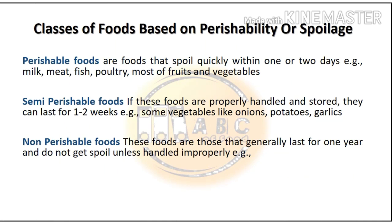Now we see the classes of foods based on perishability or spoilage. First is perishable foods — these are foods that spoil quickly within one or two days. For example, milk, meat, fish, poultry, and most fruits and vegetables come under this category.